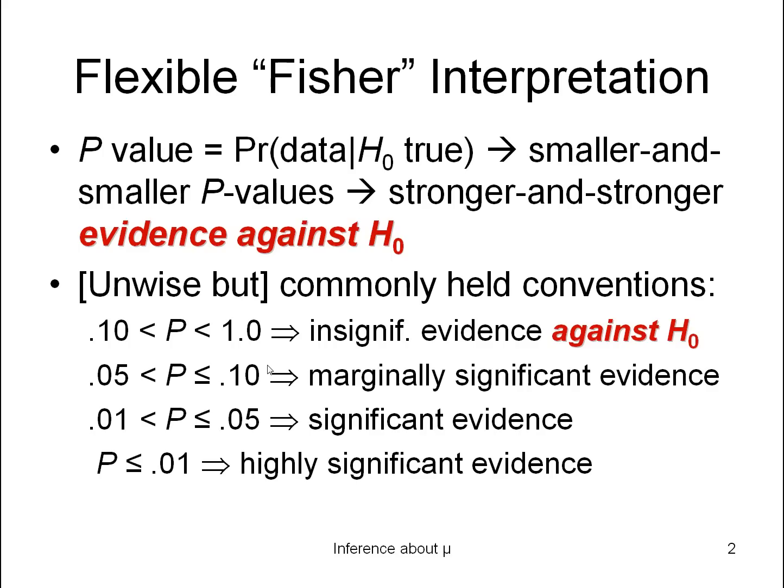I present this in several other contexts, but basically: p-value less than 0.10 but more than 0.05, we say there's marginally significant evidence against the null hypothesis. And at the other end, at the lower extreme, p-values less than 0.01 are said to have highly significant evidence against the null hypothesis.